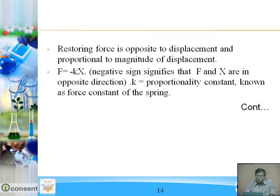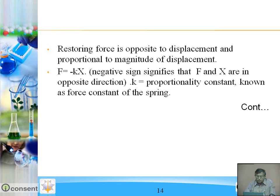The restoring force is opposite to the displacement and proportional to its magnitude. So F is proportional to x, and in equality: F = −kx. The negative sign indicates that force and displacement x are in opposite directions. The constant k is a proportionality constant known as the force constant of the spring, which depends upon the material and elastic properties of the spring.